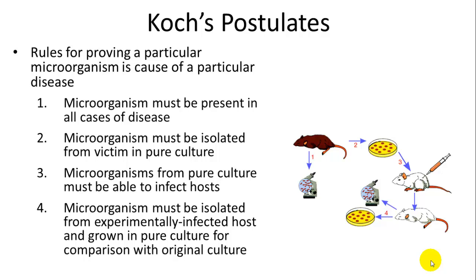The microorganism must be present in all cases of the disease. In this example, we have rats — all of them that have this disease must have the microorganism within them. Then it has to be isolated and grown in pure culture, reintroduced into a host, and must cause the same symptoms. And finally, after death, it must be isolated again from those experimentally injected hosts.